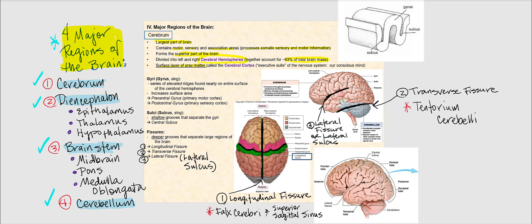The superficial layer of our cerebrum is gray matter. This layer is referred to as the cerebral cortex, which is sometimes called the executive suite of the nervous system. Basically, it's our conscious mind.